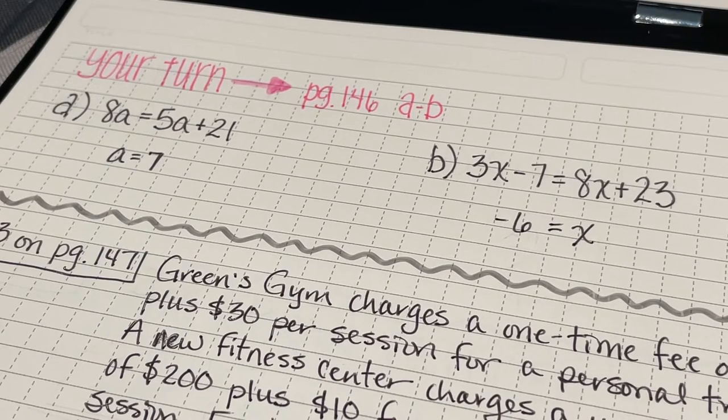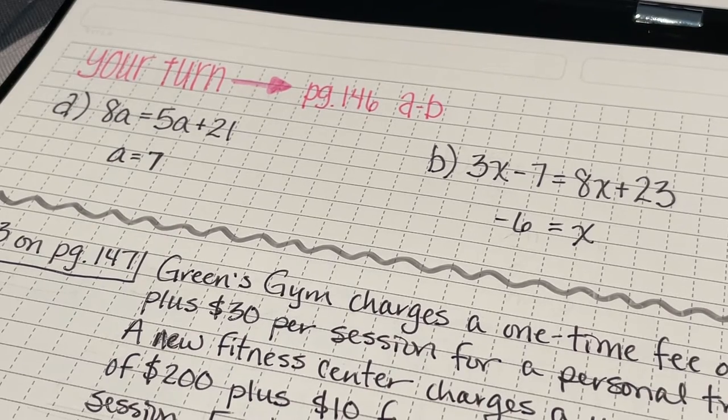The solution for problem A is A equals 7, and the solution for problem B is negative 6 equals x. You may have it written as x equals negative 6 as well.